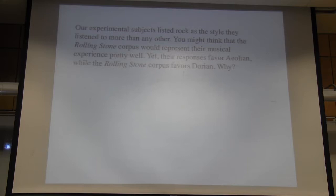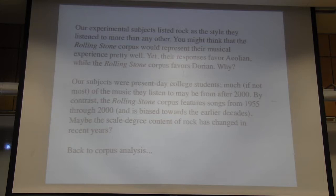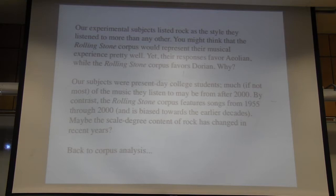Our subjects listed rock as a style they listened to more than any other, so you might think the Rolling Stone corpus would represent their experience well. But their responses favor Aeolian over Dorian, whereas the Rolling Stone corpus suggests the reverse. Well, our subjects were present-day college students, and much of the music they listen to may be from after 2000. By contrast, the Rolling Stone corpus pretty much ends at 2000, focusing on the 50s through the 90s with most songs from the 60s and 70s. So maybe the scale degree content of rock has actually changed in recent years, and that sent me back to corpus analysis.